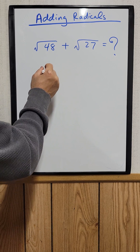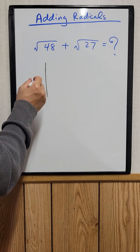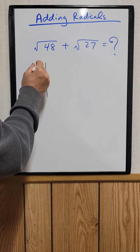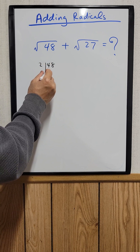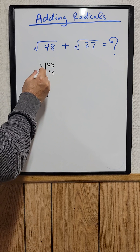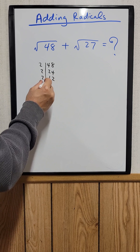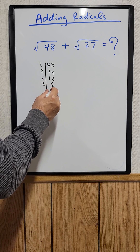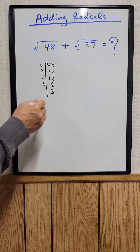In order to do that, you just make a little table. 48 can be divided by 2, so 2 into 48 would be 24. 24 divided by 2 would be 12. 12 divided by 2 is 6. 6 divided by 2 would be 3. So that's all the factors right here.